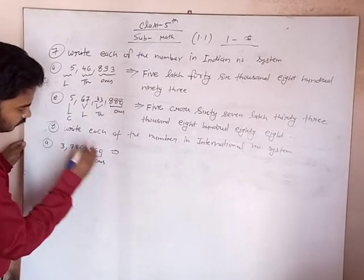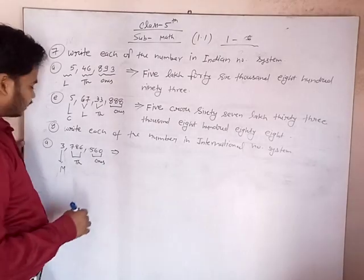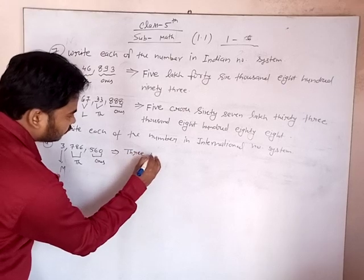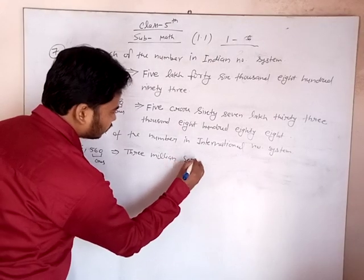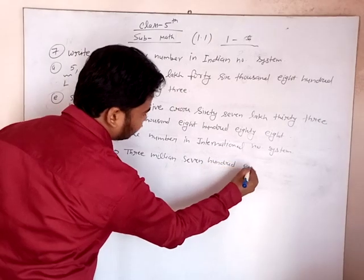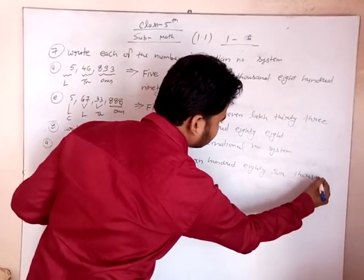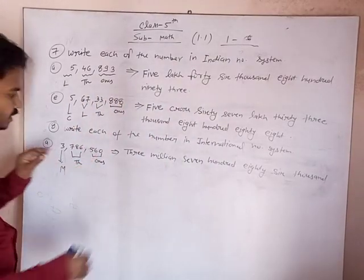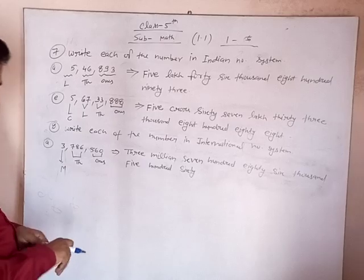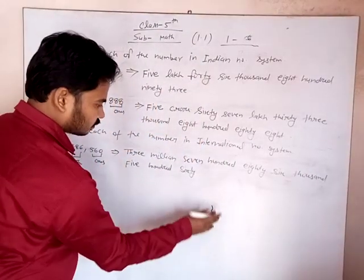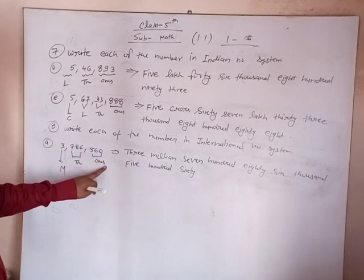It is a ones period, it is a thousands period, and it is the millions period. So we write 3,786,560 in the international number system. Understand?